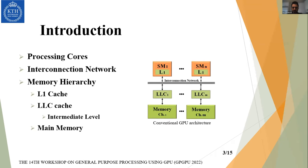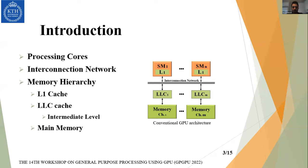As a quick summary: each GPU has several independent processing cores, and each processing core has its private L1 cache. If the L1 cache cannot respond to a memory request, the request is sent to the lower level of the memory hierarchy via the interconnection network. If the LLC can respond, the data goes back to the corresponding SM or processing core; if not, the main memory must respond.